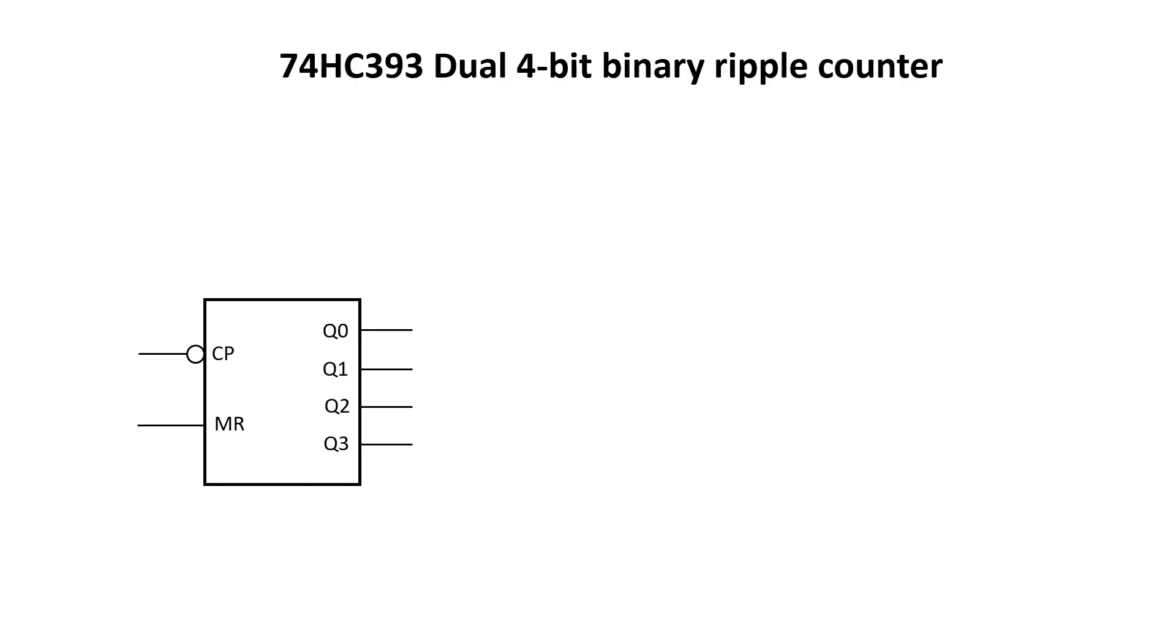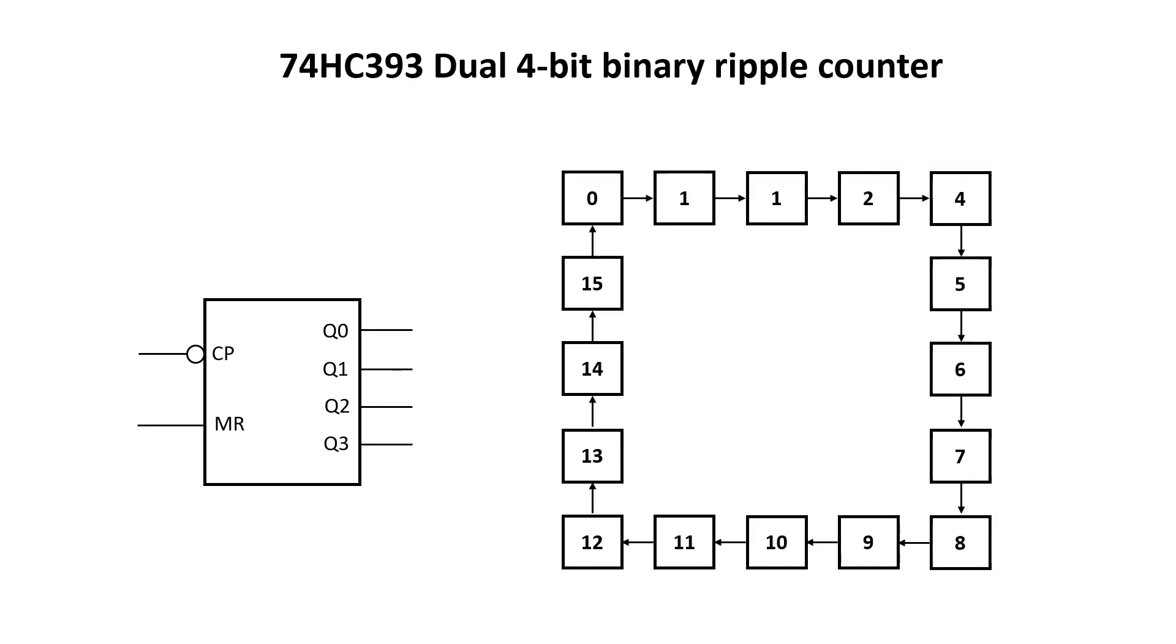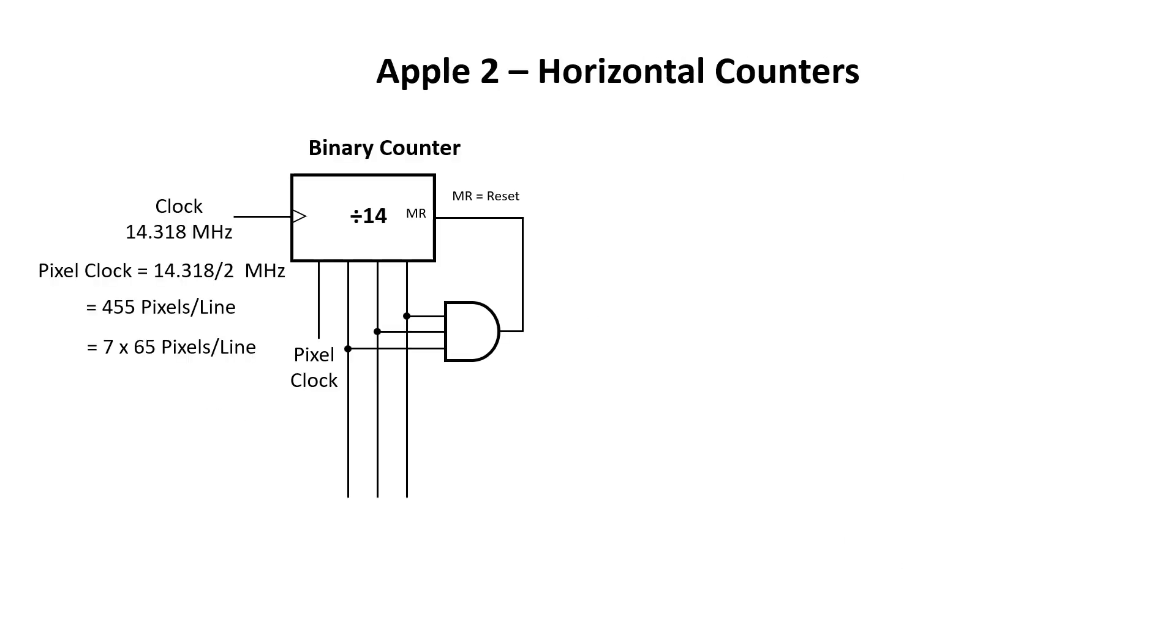In the breadboard build of the raster generator, I used the 74HC393, which is a dual 4-bit binary ripple counter. To generate the divide by 14, I ended together the three upper bits from a 4-bit output, and this signal was sent to the reset of the counter. So it counted from 0 to 14, and once it hit 14, it went back to 0. Almost immediately.